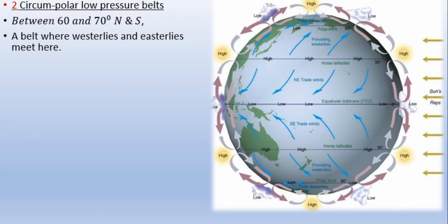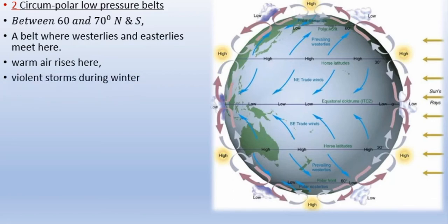At this meeting point of easterlies (trade winds) and anti-trade winds, warm air rises, producing violent storms during the winter season. These are some important features of the subpolar low pressure belts.